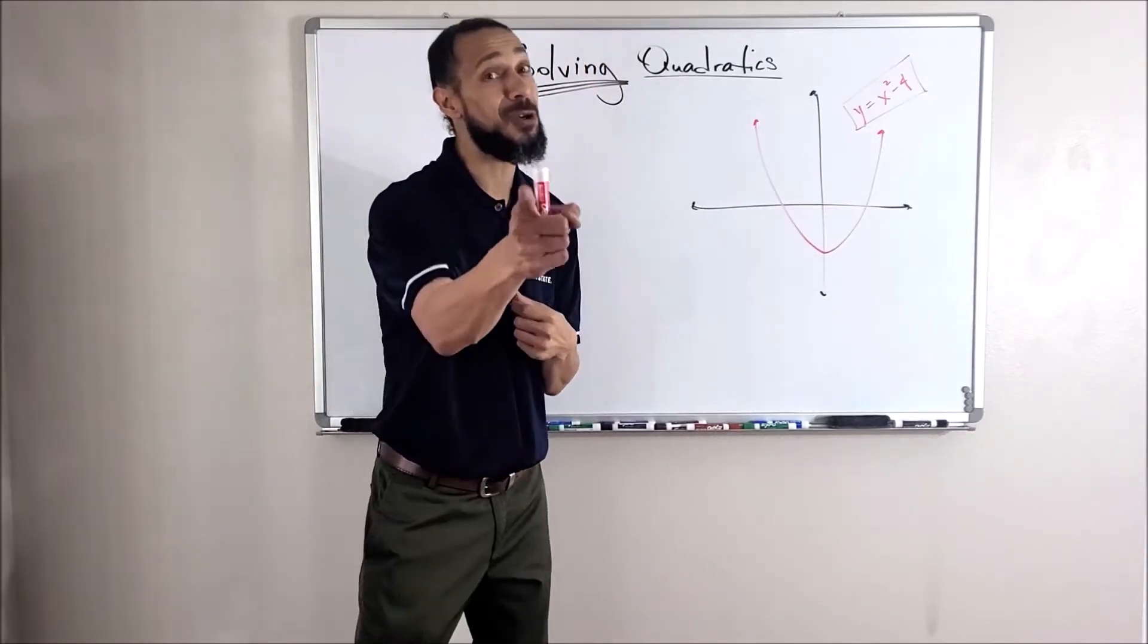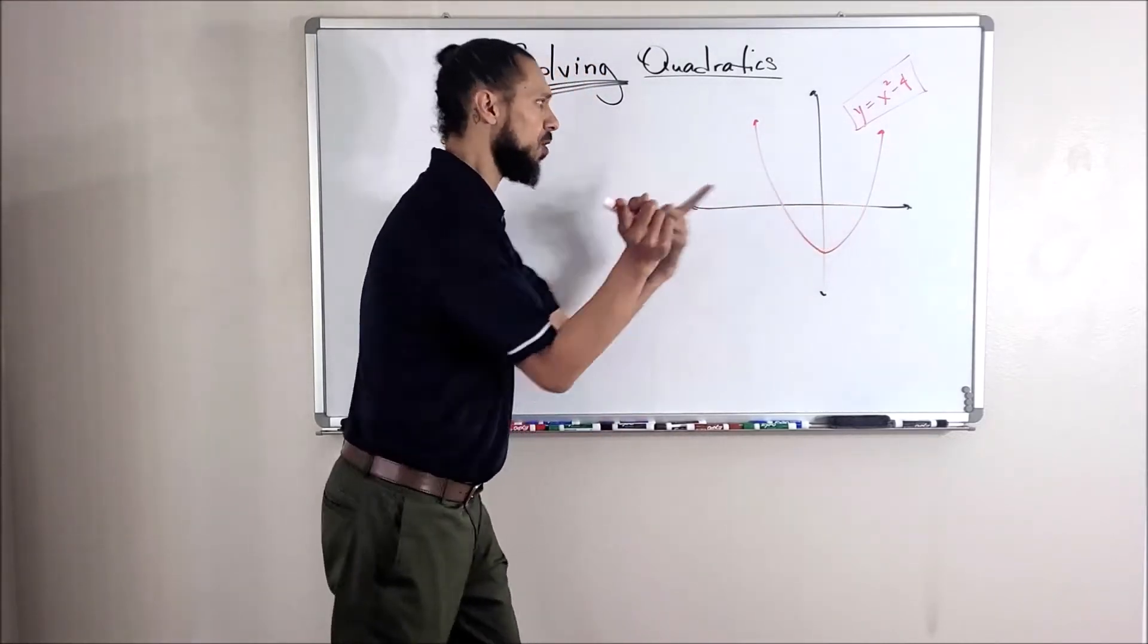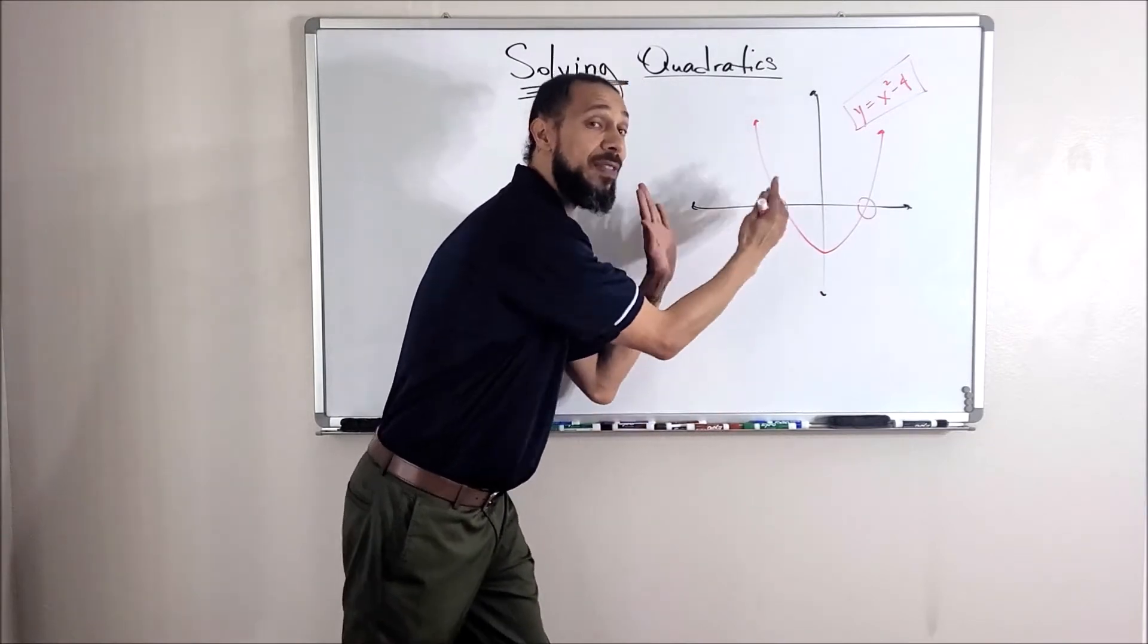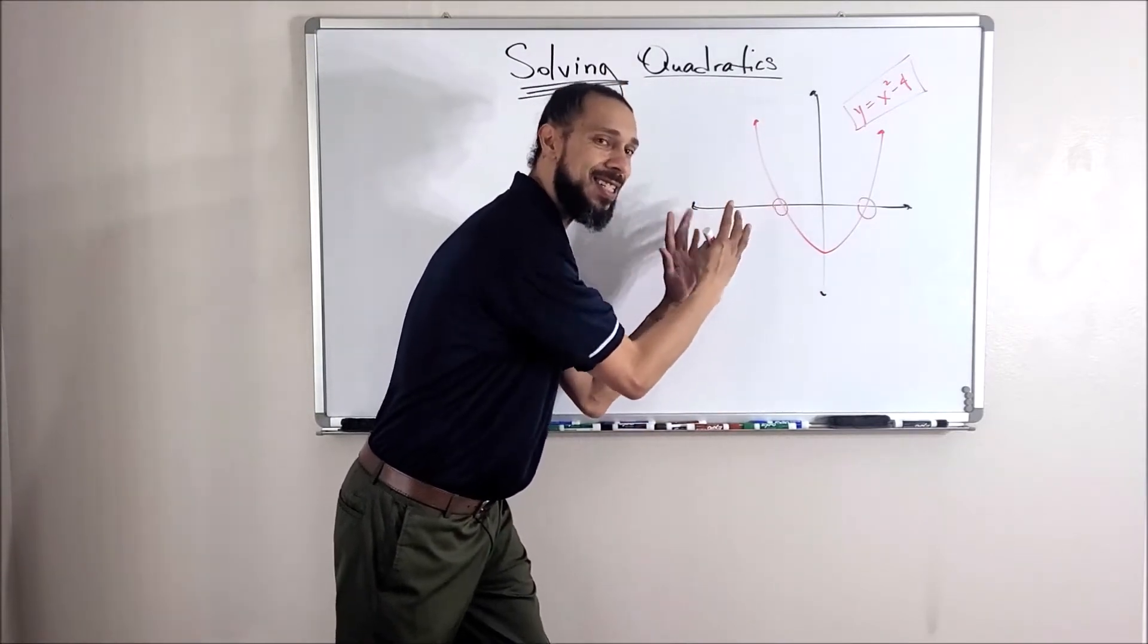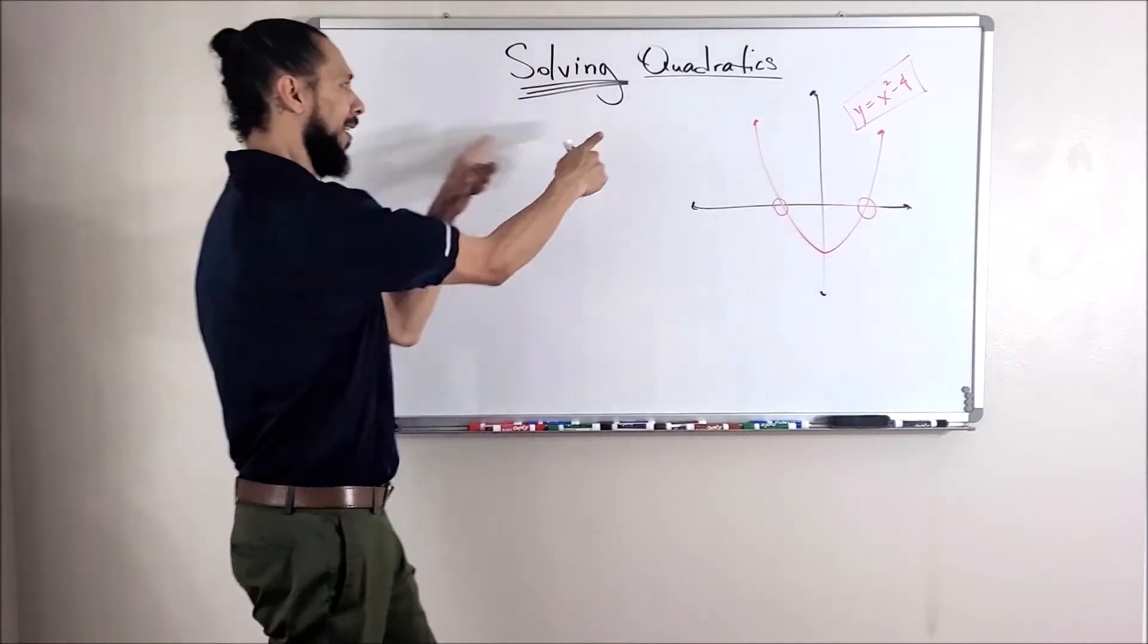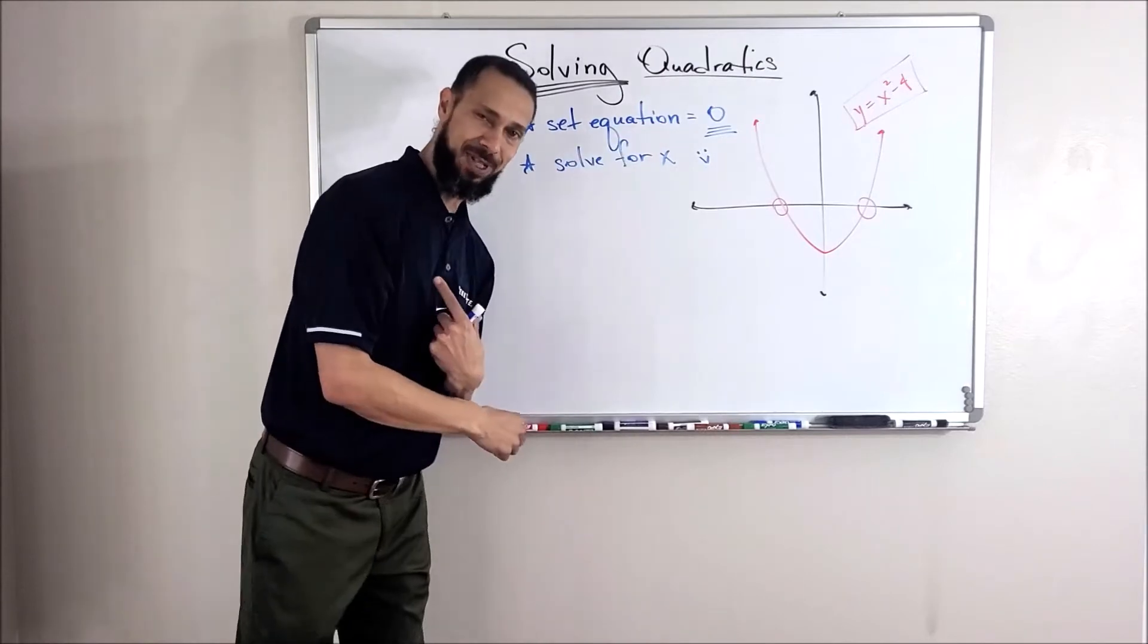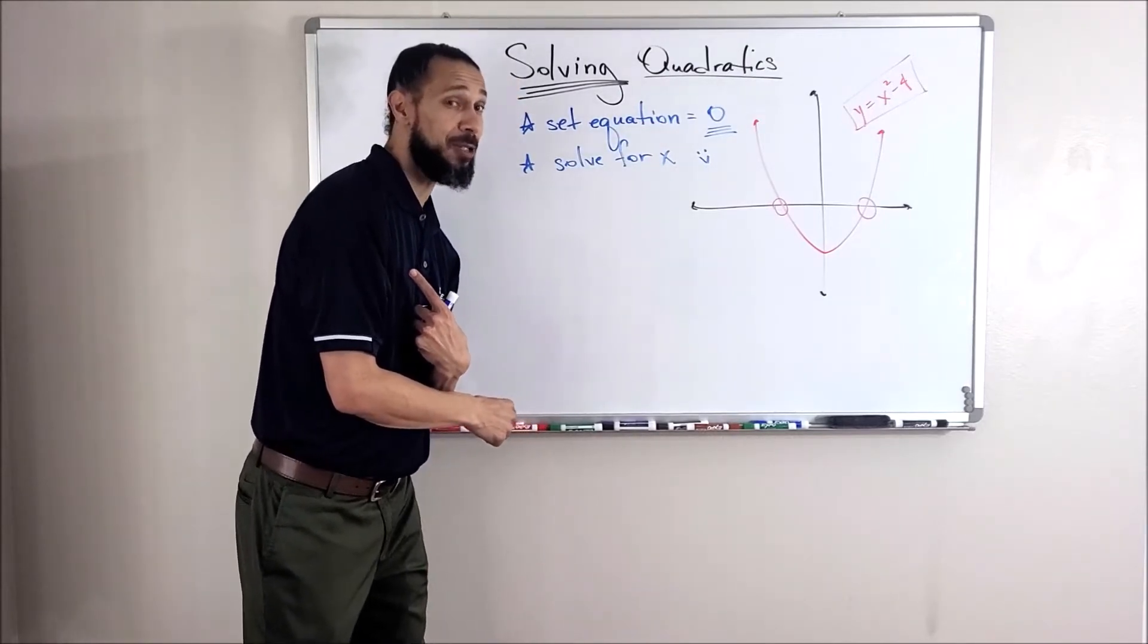First rule about solving quadratics, if we want to know these points, and I'm talking about these points where the line crosses the x-axis, remember what the y value is here. Zero. So couldn't I just take the equation and set it equal to zero? I think that's what I'm going to do.